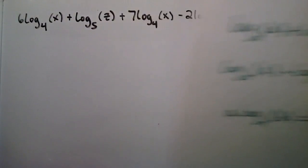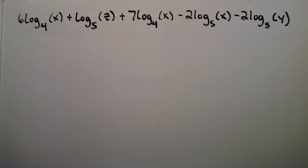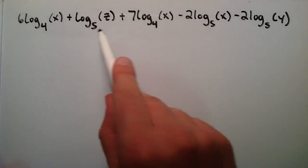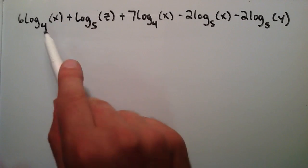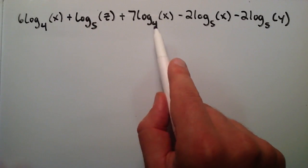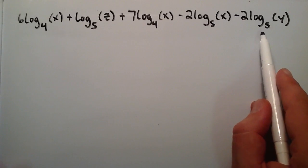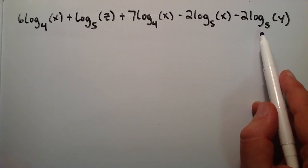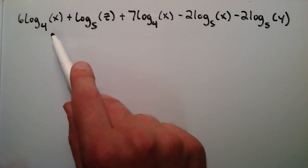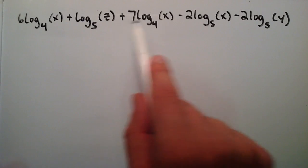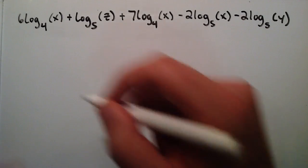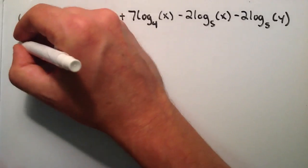The first thing we want to do is take note of all of these base numbers here. We have 2 that are base 4 and 3 that are base 5. In order to condense this, we want to organize it so that the base 4's are next to each other and the base 5's are next to each other. So let's go ahead and do that first.